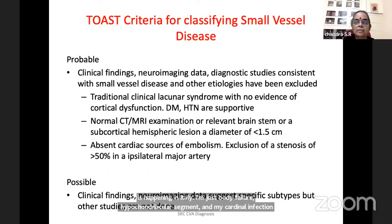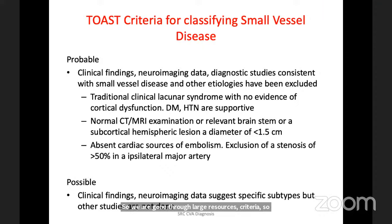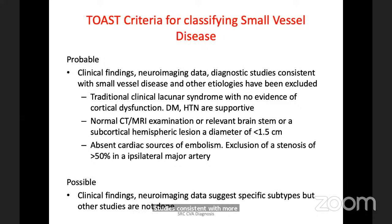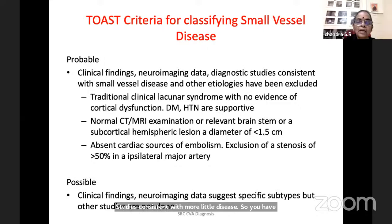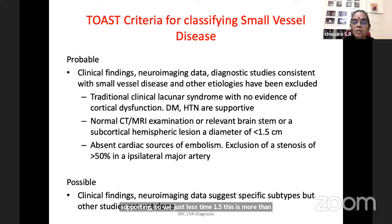For small vessel disease by TOAST criteria: probable if clinical findings, neuroimaging, and diagnostic studies are consistent with small vessel disease — a clinical lacunar syndrome with no evidence of cortical dysfunction, diabetes-hypertension association, and normal CT/MRI or relevant brainstem or subcortical lesion less than 1.5 cm. Large vessel disease is greater than 1.5 cm; small vessel disease is less than 1.5 cm.